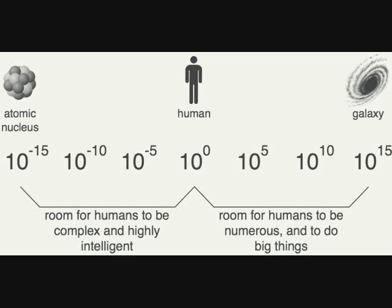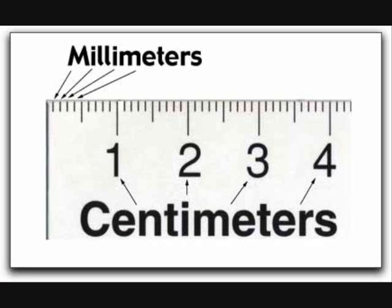To put things in perspective, let's start with a human. We're on a scale of 10 to the 0 meters, so 1 to 2 meters in height usually. 1,000 times smaller than that, we have a millimeter — those little tiny marks on a metric ruler that seem to be on top of each other.